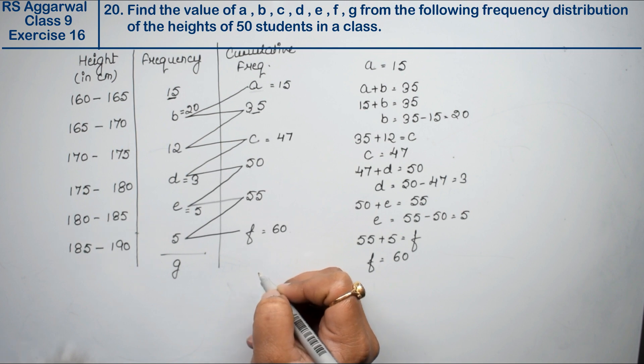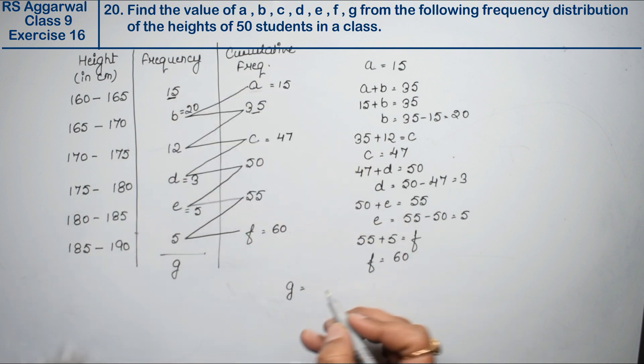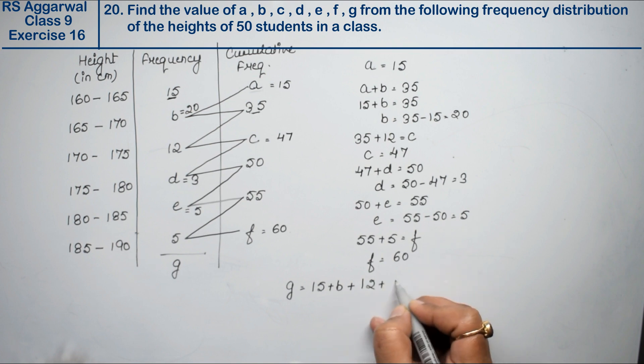Now we have to take this. How much is G? So G is how much? 15 plus B plus 12 plus D plus E. Sorry, plus 5. 15 plus B, how much? 20 plus 12.